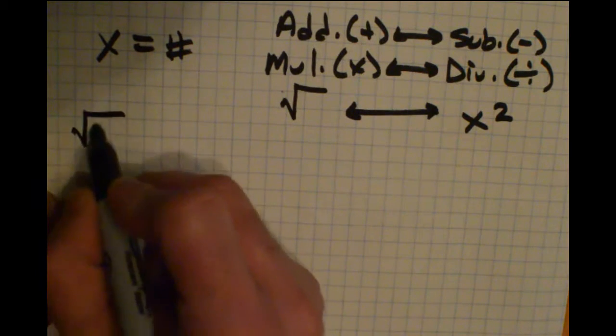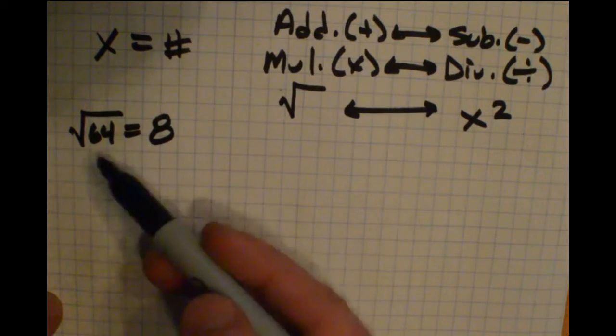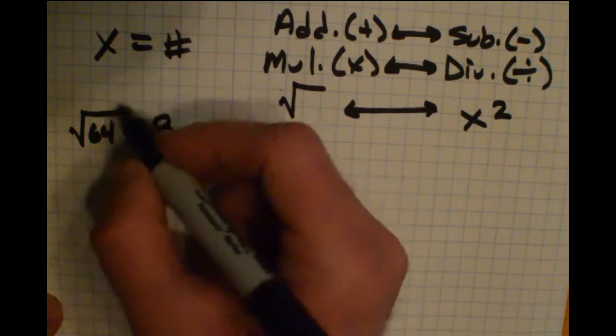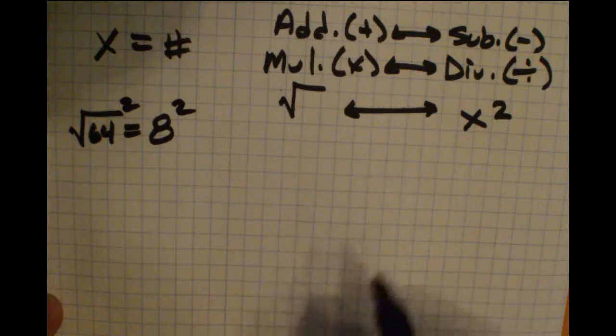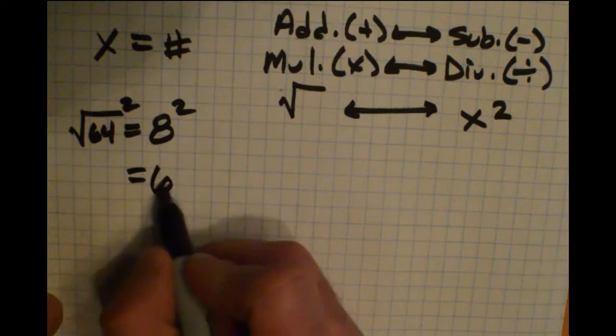Here's a quick example. We would probably all agree that the square root of 64 is 8. Now, if I wanted to get rid of that square or the square root, I would do the inverse and square both sides. What's going to happen here is that on the right side, 8 squared is 64.